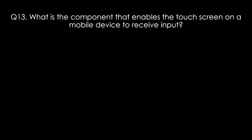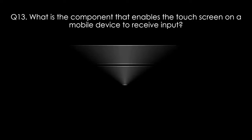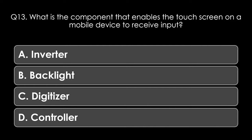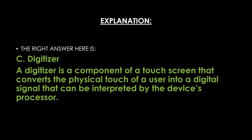Question thirteen. What is the component that enables the touch screen on a mobile device to receive input? Options: inverter, backlight, digitizer, or controller. The right answer is digitizer. A digitizer is a component of a touch screen that converts the physical touch of a user into a digital signal that can be interpreted by the device's processor.